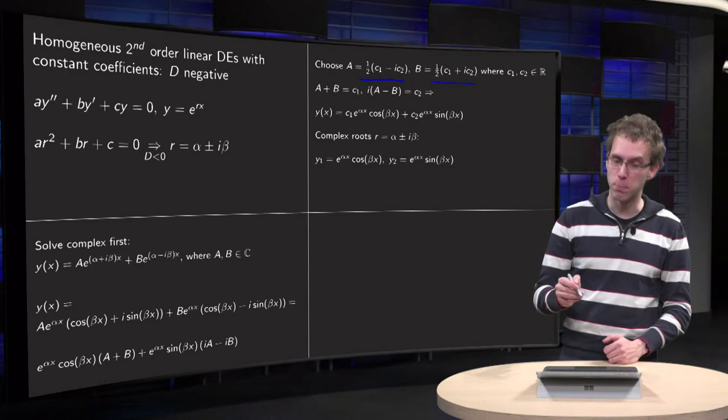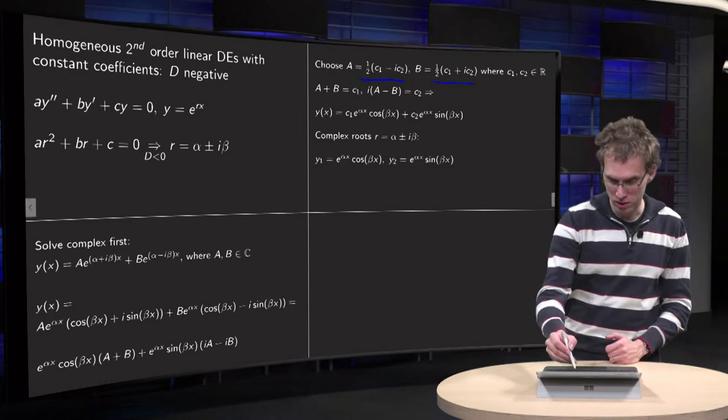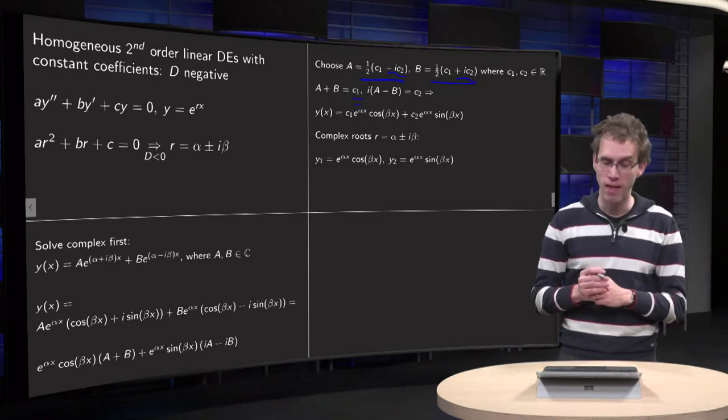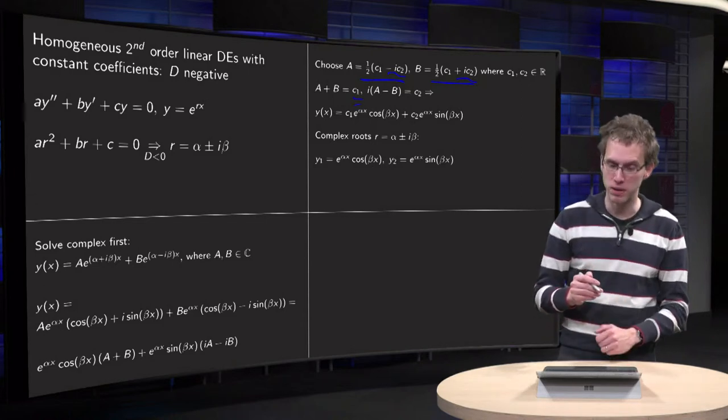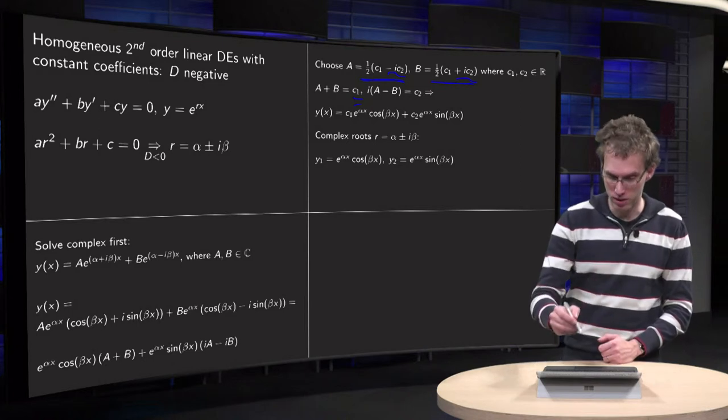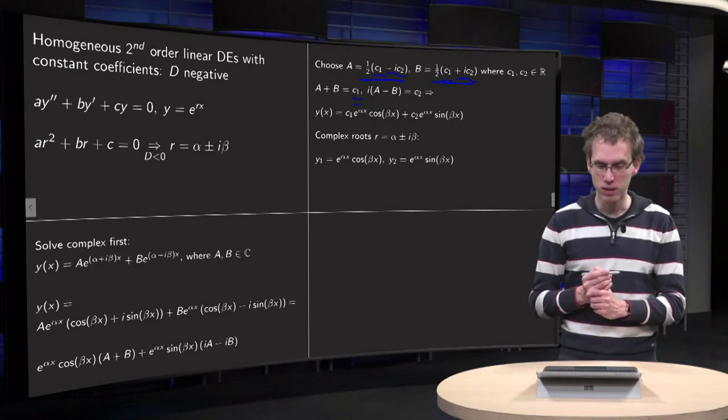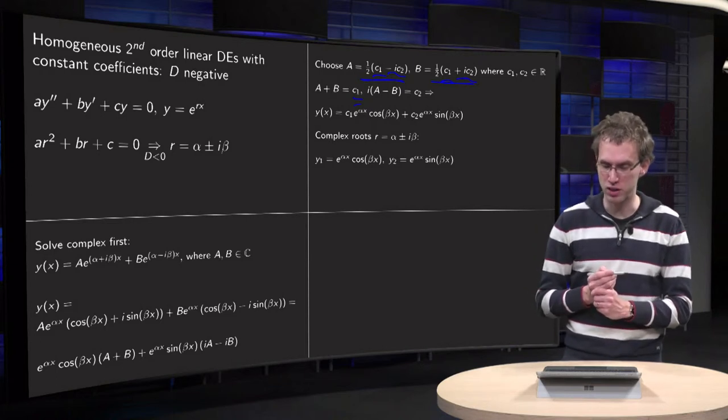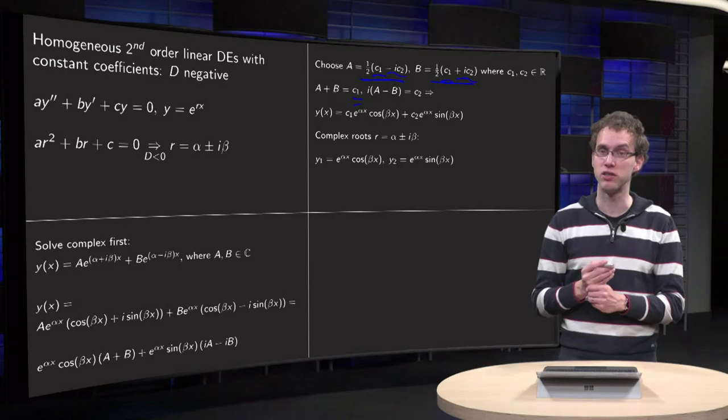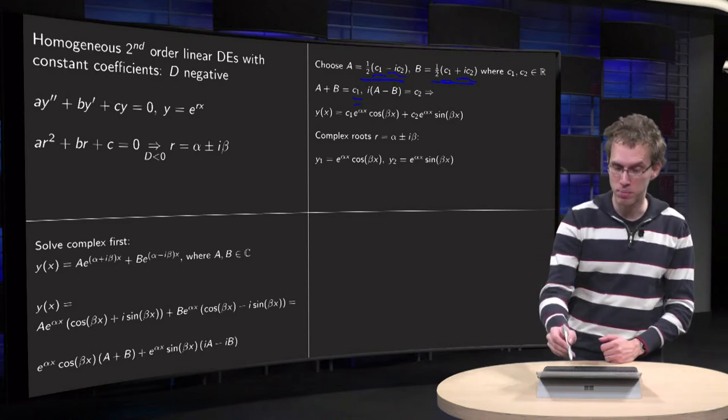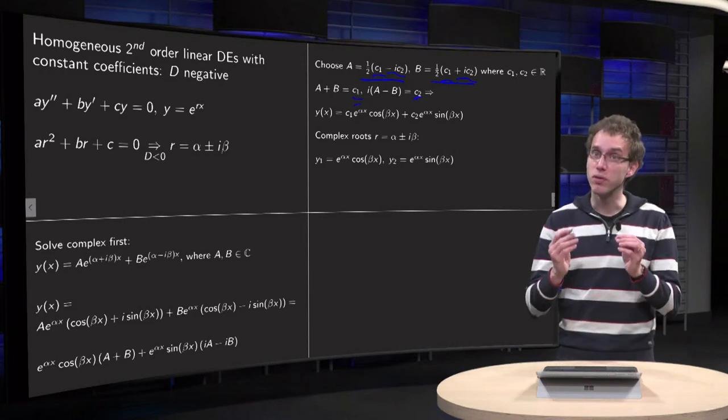So what happens then? If you now compute A + B, those factors will drop out and you get c₁. So A + B becomes real. And if you compute A - B, the c₁ will drop out and you get -½ic₂ - ½ic₂, so -ic₂. So i times (A - B) becomes exactly c₂.